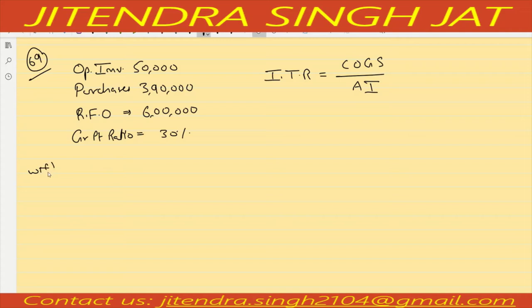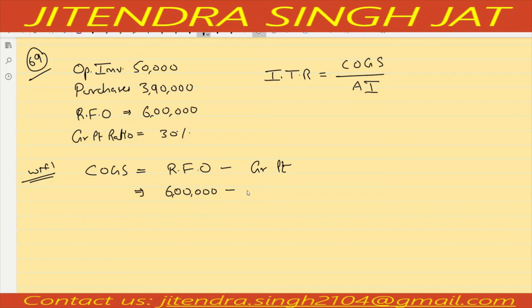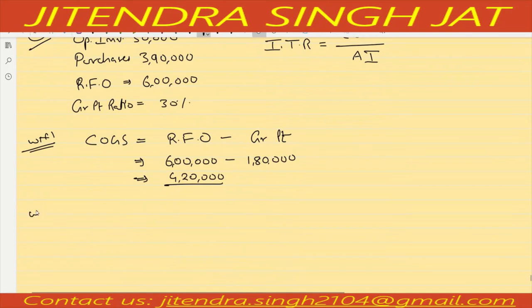Gross profit is 30% of 6 lakh, which is 1 lakh 80,000. So Cost of Goods Sold equals 6 lakh minus 1 lakh 80,000, which is 4 lakh 20,000. Now for average inventory: opening inventory is given but closing inventory is not given, so first we need to calculate closing inventory.